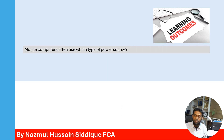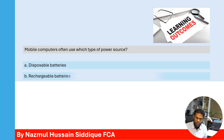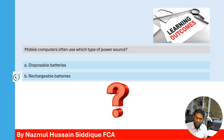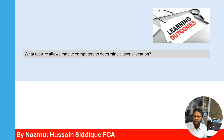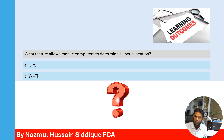Question 3: Mobile computers often use which type of power source? Option A — disposable batteries. Option B — rechargeable batteries. The correct answer is rechargeable batteries. Question 4: What feature allows mobile computers to determine a user's location? Option A — GPS. Option B — Wi-Fi. The correct answer is GPS.